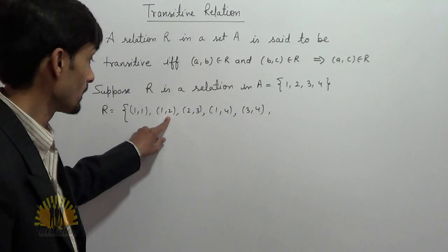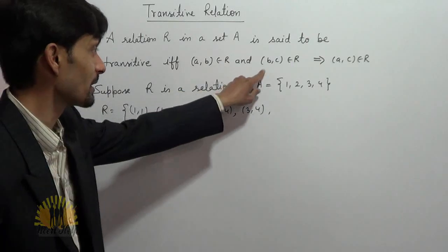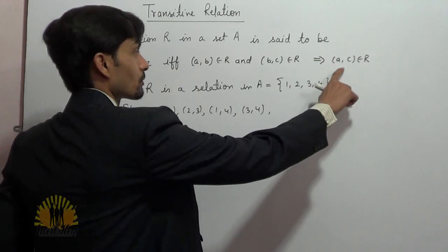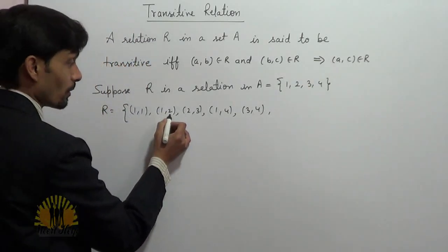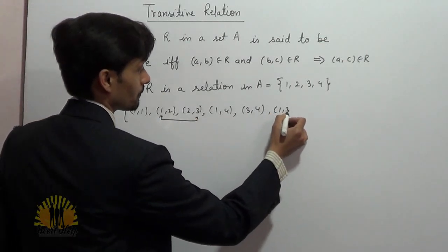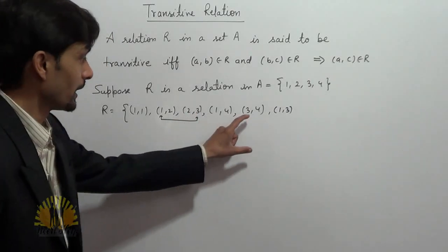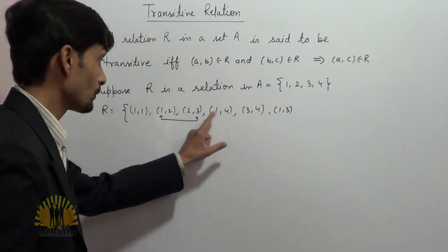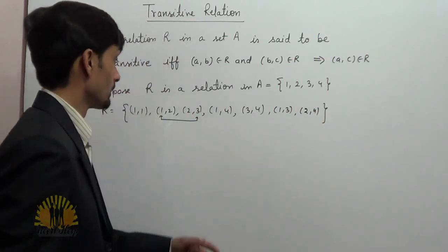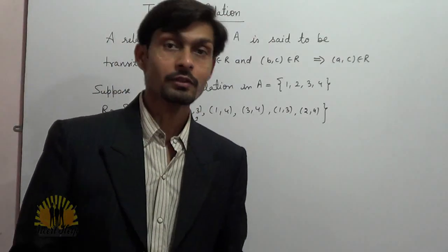Here you can see (1,2) belongs to R and (2,3) belongs to R. According to the definition, if AB belongs to R and BC belongs to R, then AC must belong to R. So (1,3) must belong to R. Moreover, (2,3) belongs to R and (3,4) belongs to R, so (2,4) must also belong to R. Now this relation becomes a transitive relation.